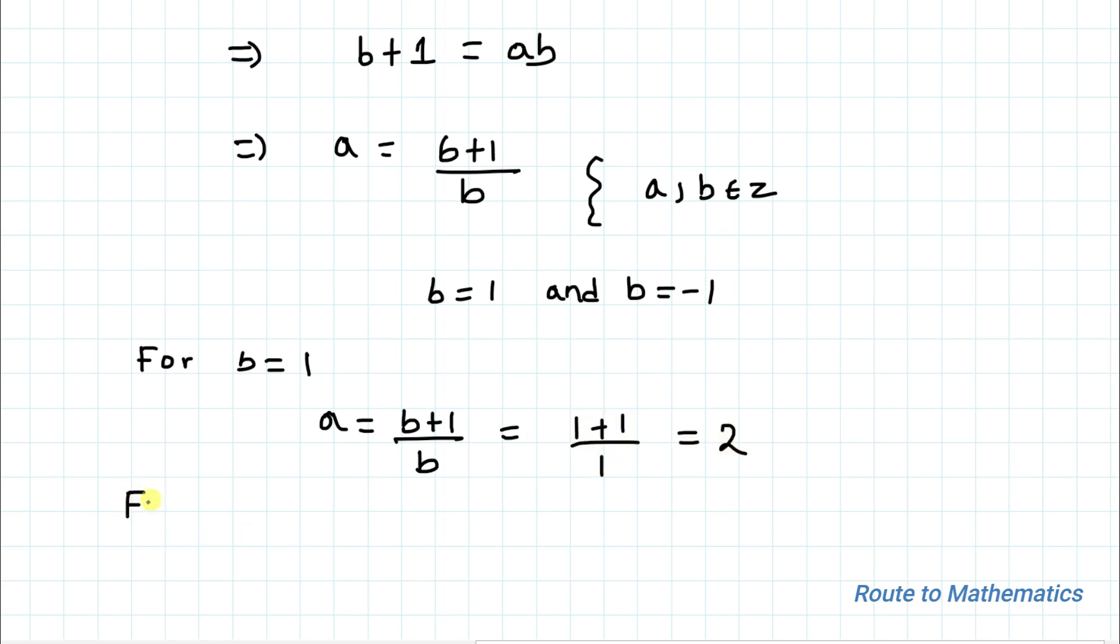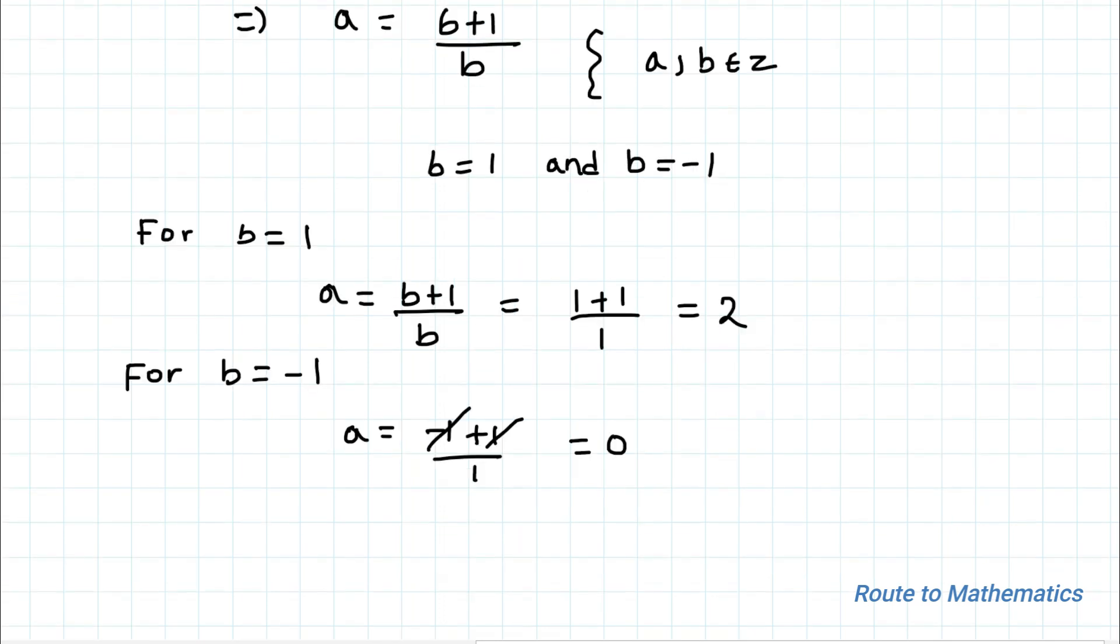Now for b = -1, we are getting a = (-1+1)/1. So -1 plus 1 get cancelled out. Here we are getting a = 0.